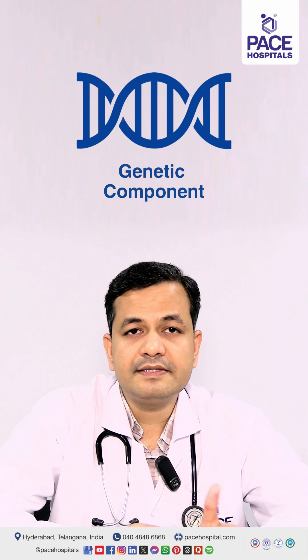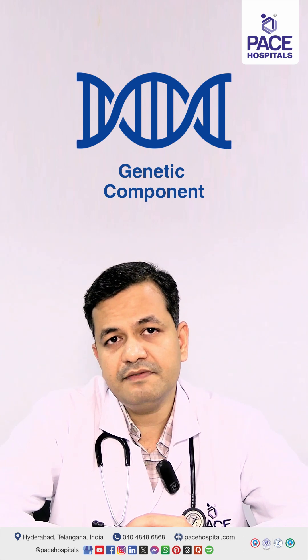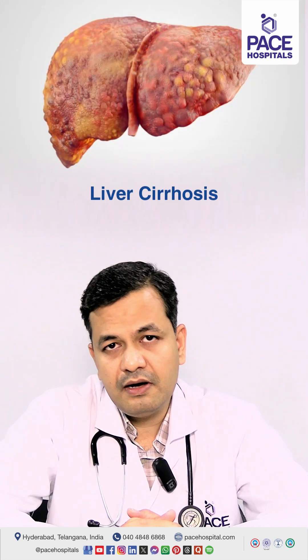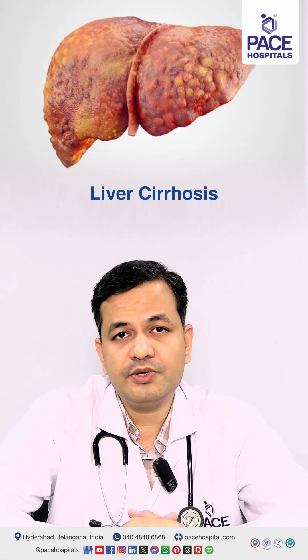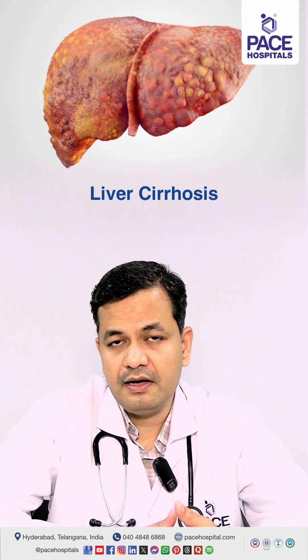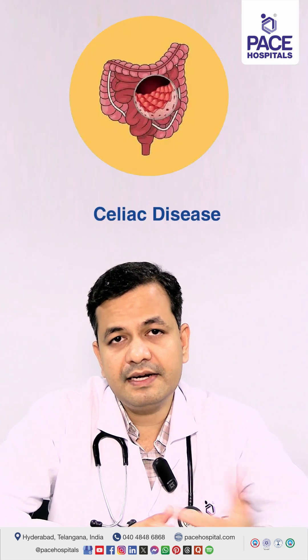There is something called secondary IgA nephropathy, which is a condition where IgA nephropathy develops secondary to some other illness. For example, patients who are suffering from liver disease called cirrhosis can develop IgA nephropathy after cirrhosis.